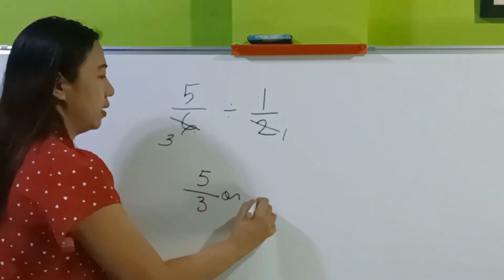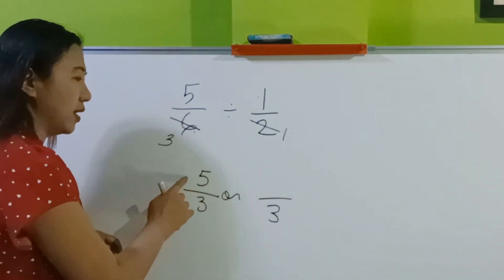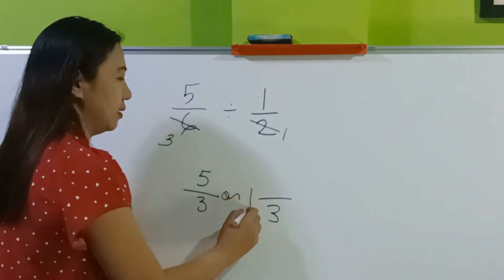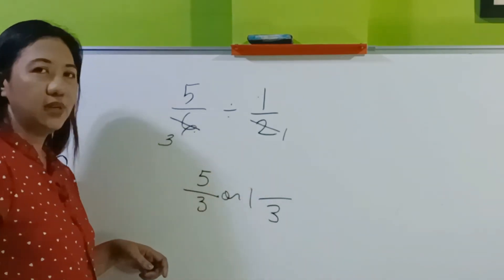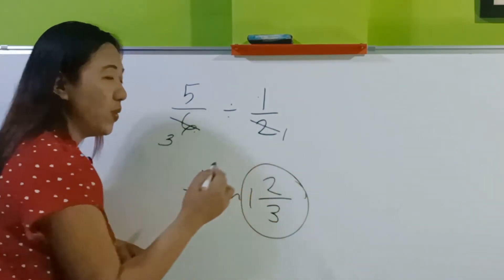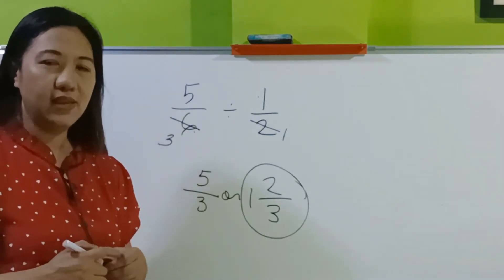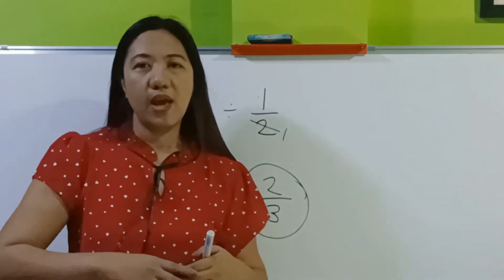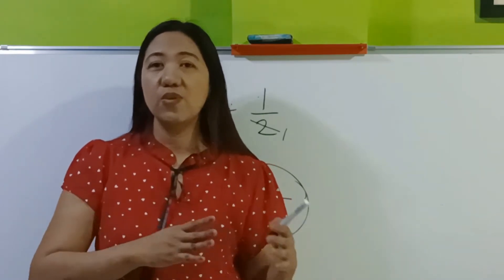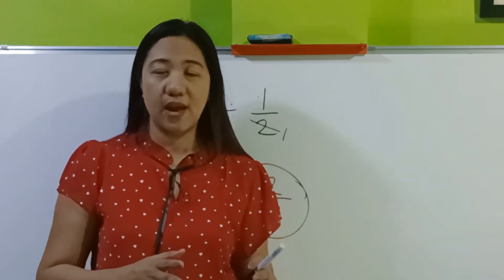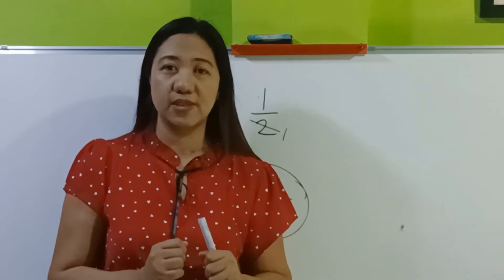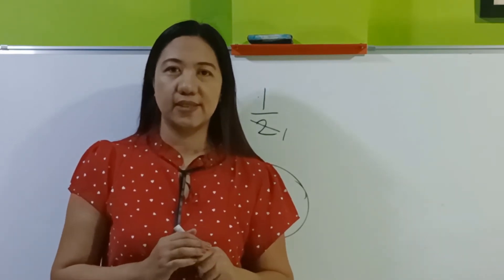Proceed to another shortcut. 1 times 5 is 5, 3 times 1 is 3. How many 3's are there in 5? 1, remainder 2 — so 1 and 2 thirds again. In math, we have the long cut, the shortcut, and any way you go as long as you arrive at the same answer is still correct.